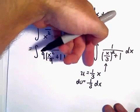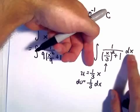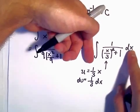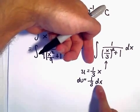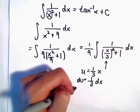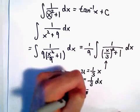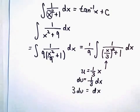So kind of forgetting about the 1 ninth for a second, I'm thinking if we want to replace the dx, well, here's our dx, we could multiply both sides by 3, and it says 3 du will be our dx.